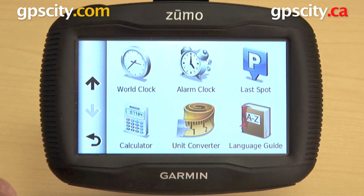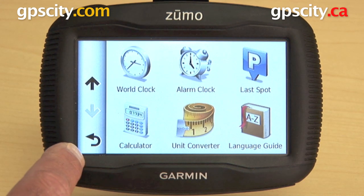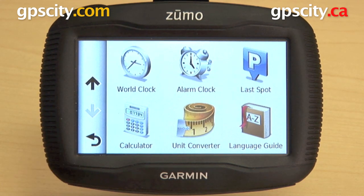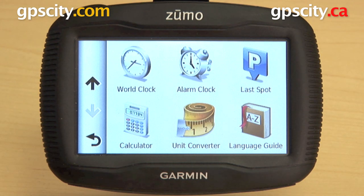So these little functions you can use in the unit differ a little bit from what the GPS does and give it a bit more functionality. So that's the apps on the Garmin Zumo 350 motorcycle GPS.